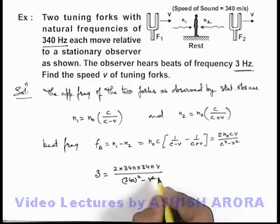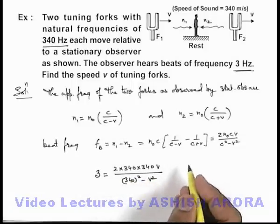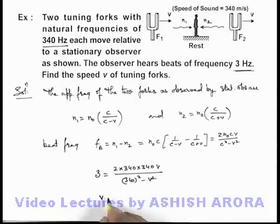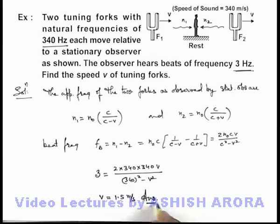Minus v squared. In this problem we have taken the speed of sound to be 340 meters per second. On simplifying this expression, the value of v we get is 1.5 meters per second. That will be the answer to this problem.